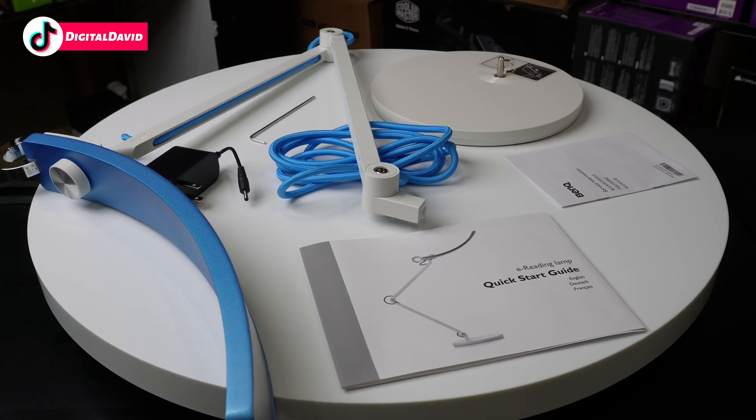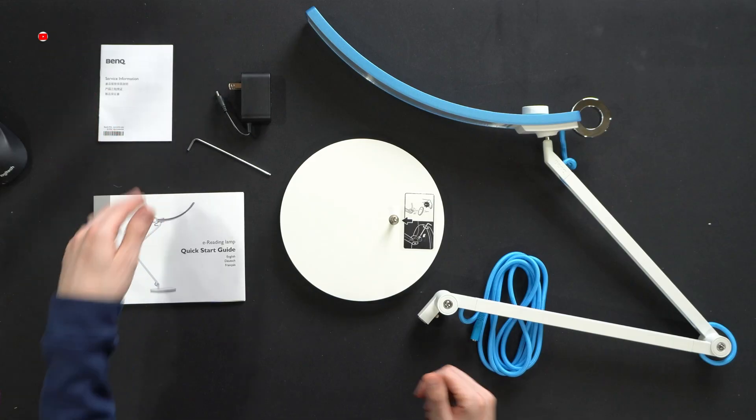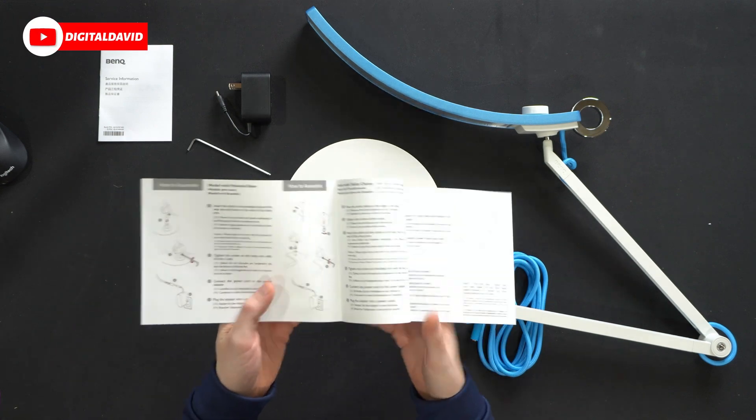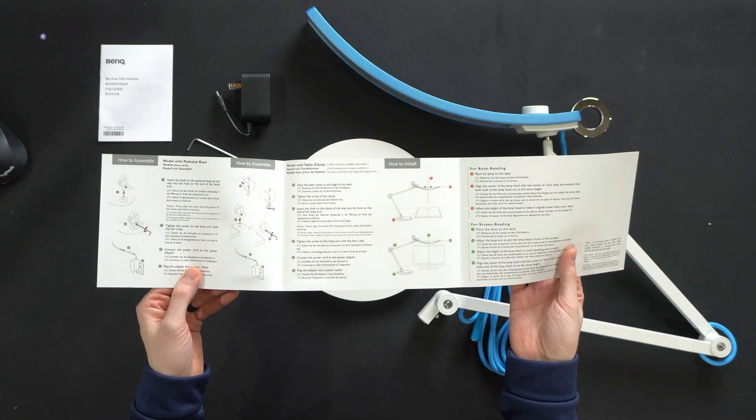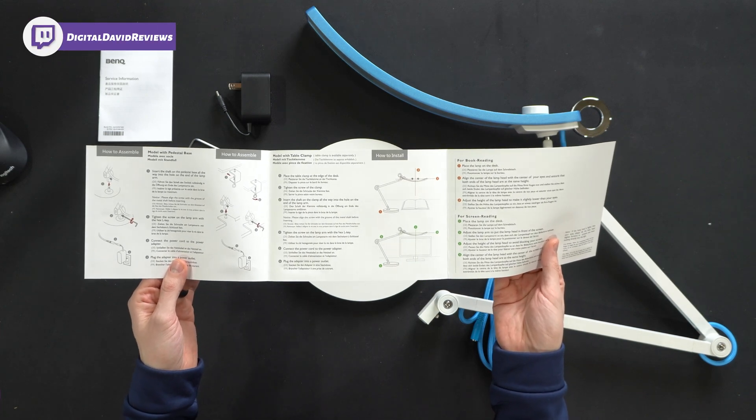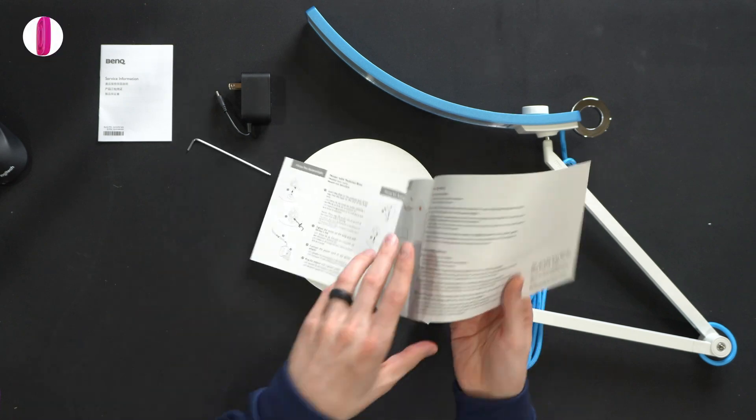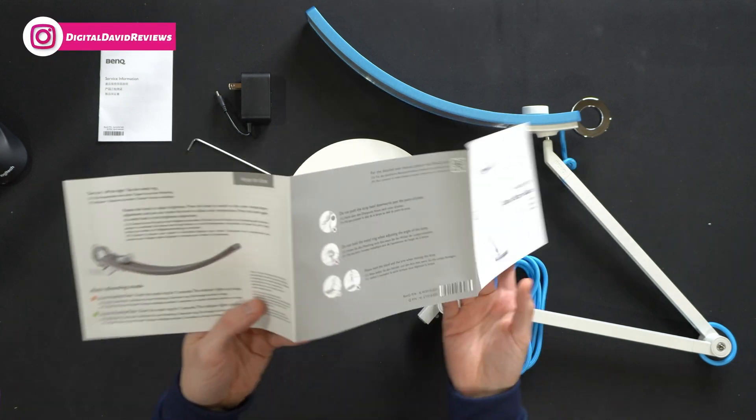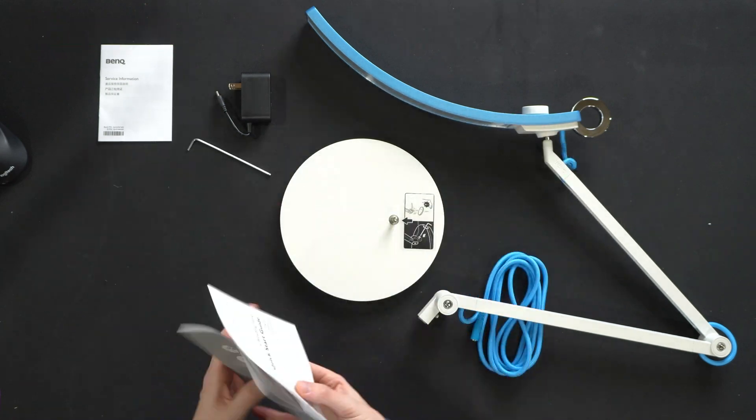Here are all the contents. First up, we have our product literature featuring our service information and our quick start guide. The quick start guide is available in multiple languages with charts and diagrams showing you how to set up and install your e-reading lamp. We have our controls as well, going over everything you need to know right there for you.